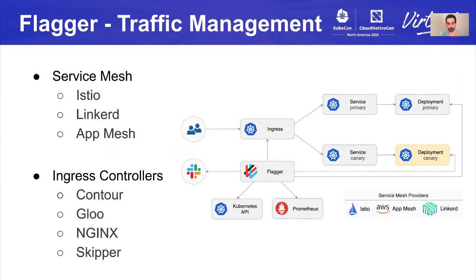Maybe you are not ready to use a service mesh, or you just want to do progressive delivery with ingress controllers. For that, Flagger works with Contour, Gloo, Nginx, and Skipper. You can also combine them — for example, Linkerd doesn't come with an ingress solution, so you can combine one of those ingress controllers with Linkerd and do canary releases for both your front-end apps and back-end apps.